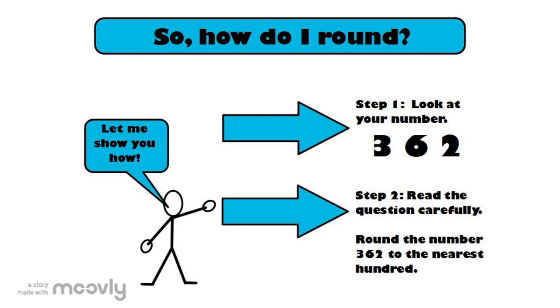So let's get down to it. How do I really round? Well, you want to follow a couple steps. Step one, look at your number. In this case, it's 362.